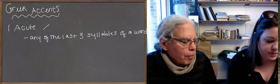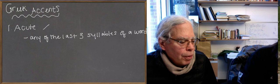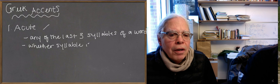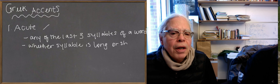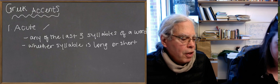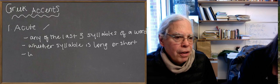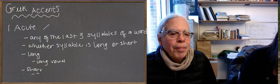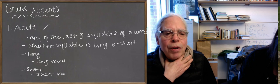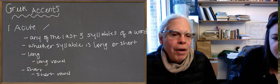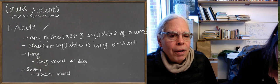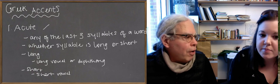Let's talk about long and short syllables. A syllable is long if it contains a long vowel, and short if it contains a short vowel. For our purposes, we can say a long vowel or a diphthong. Why call these things long? It takes longer to pronounce a long vowel. 'Uh' is a short vowel, 'ah' is a long one. It's a matter of amount of time.